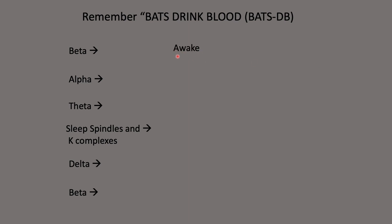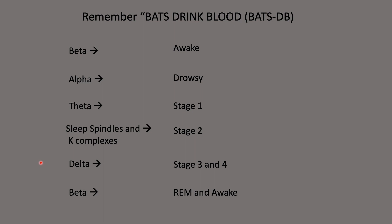This spells out BATS DB. Beta waves appear just before sleep when we're still wide awake. Once we get drowsy we see alpha waves. Stage 1 is associated with theta waves. Stage 2 is where we see sleep spindles and K-complexes. Stages 3 and 4 are when we have delta waves. Then in REM sleep there's so much brain activity that we see beta waves again.